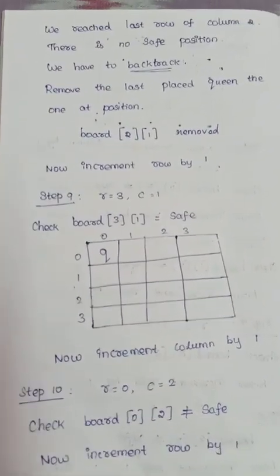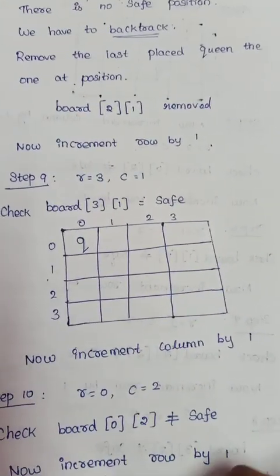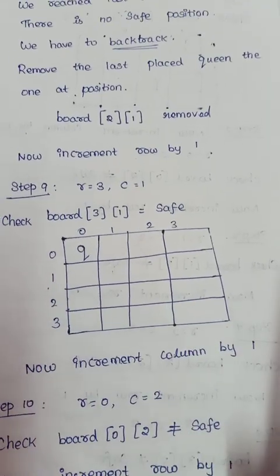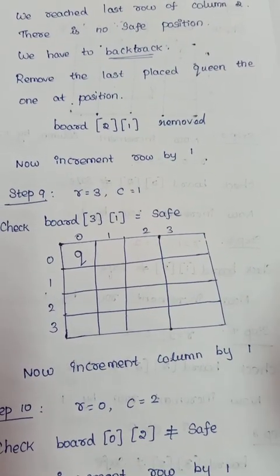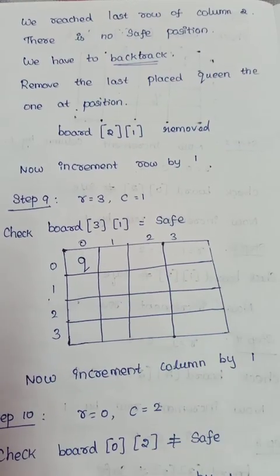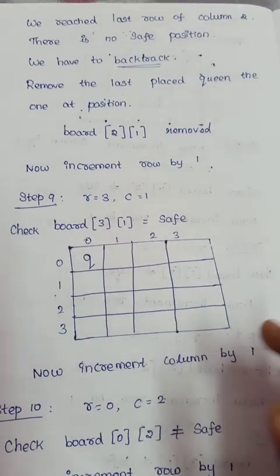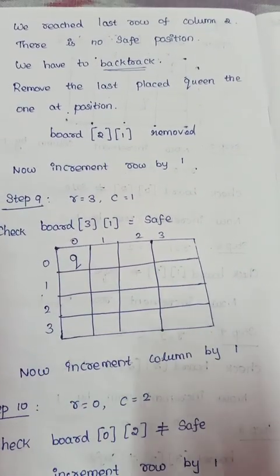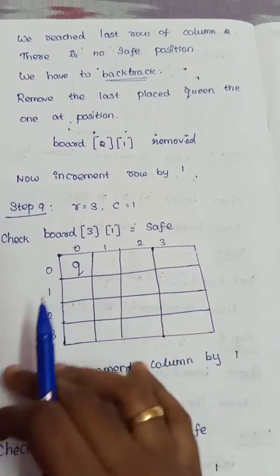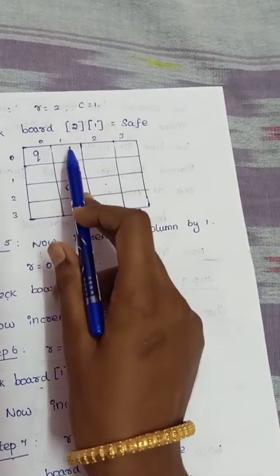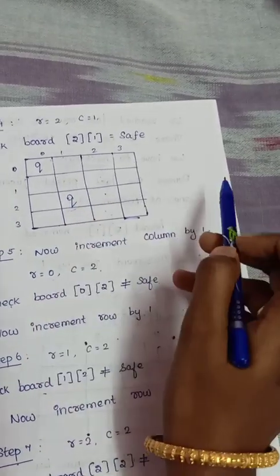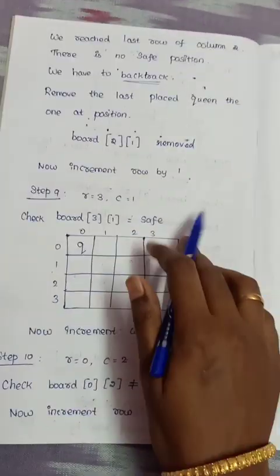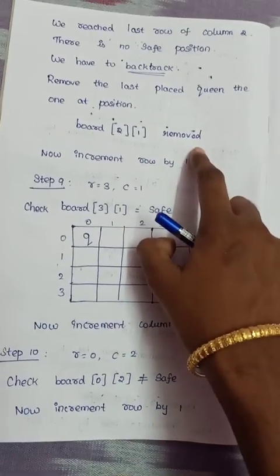When there is no safe position, we use the backtracking method. We backtrack and remove the last placed queen. In this case, the last inserted queen was at board[2][1], so we remove it.